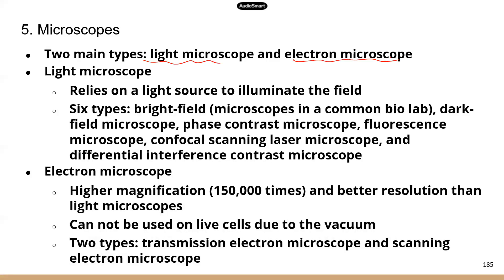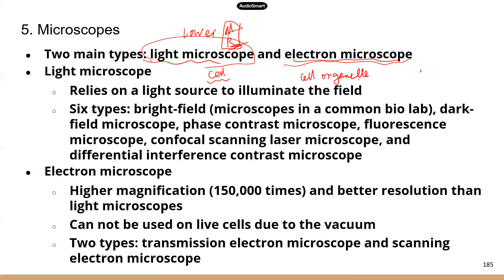There are some big differences between those two types of microscopes. Light microscopes have a lower magnification and lower resolution than electron microscopes. With a light microscope, we can see the general structure of a cell, but with electron microscopes we can see the specific internal structures of a cell or even a virus. Viruses can infect a cell, so they're much, much smaller than a cell.